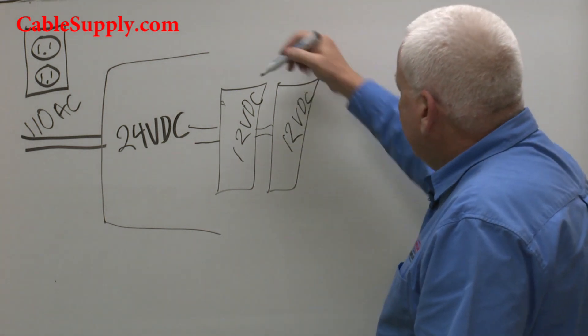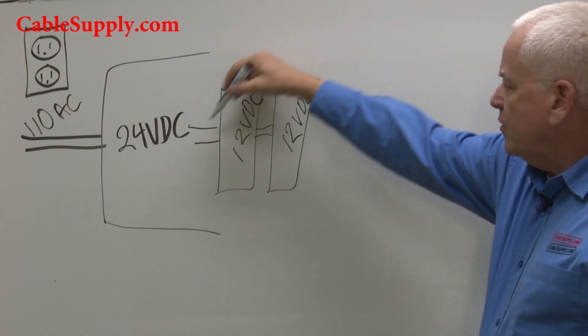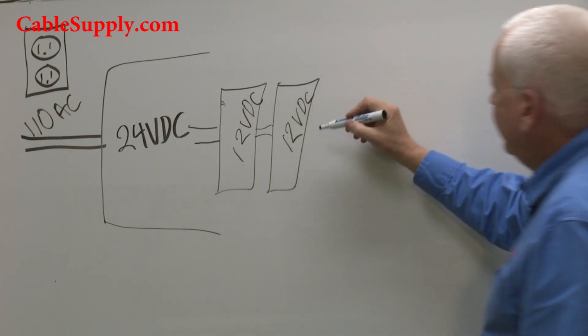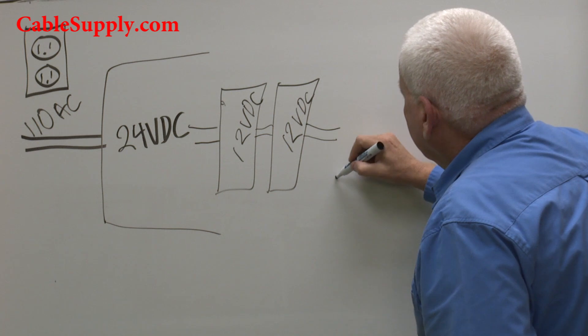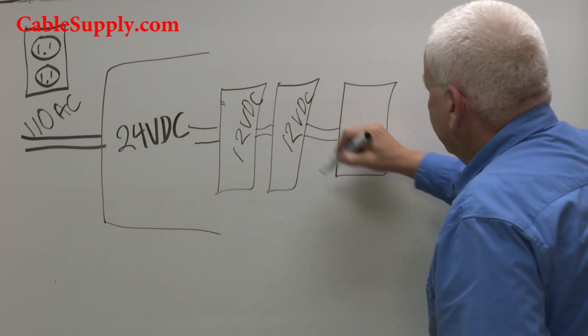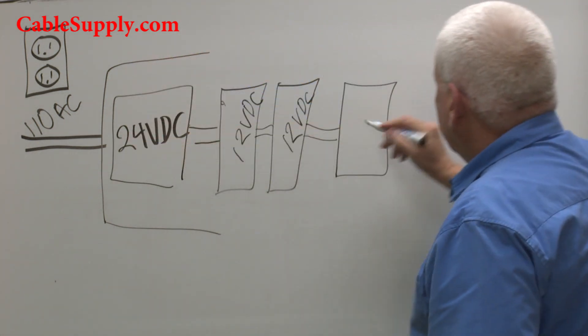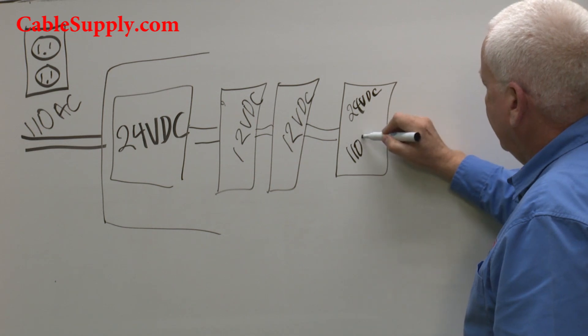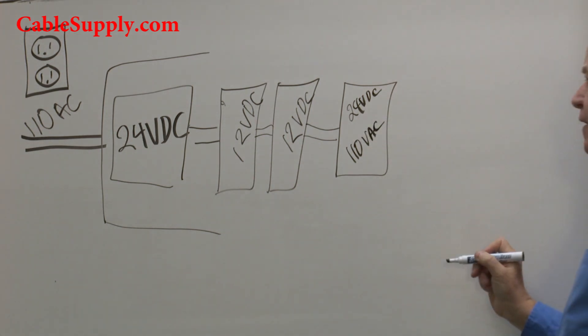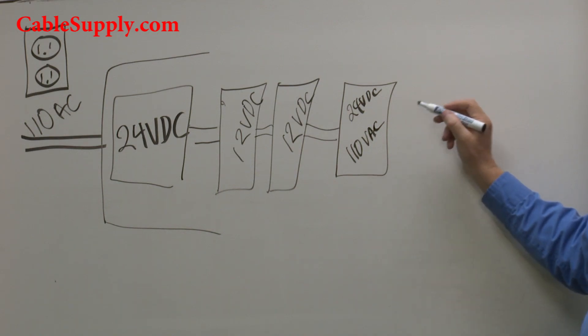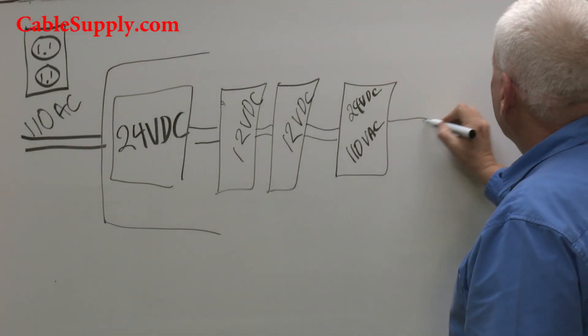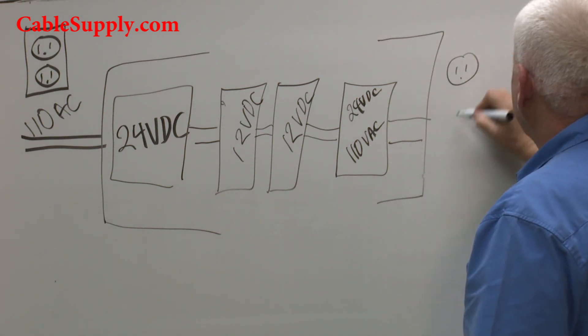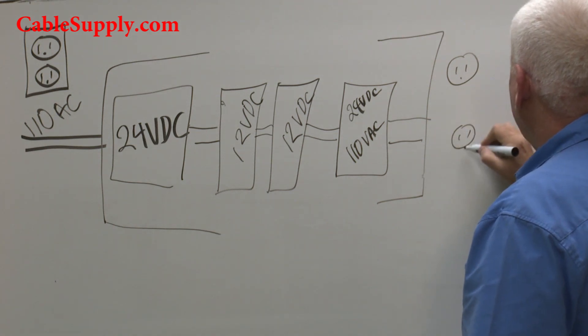It creates DC current that keeps two 12 volt batteries fully charged to 12 volts. And then what happens over here is you have another device, the same as here, that translates 24 volts DC back to 110 volts AC, and it's called a rectifier. Then it goes back into AC, and there's little plugs back here that come out the back.